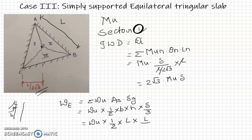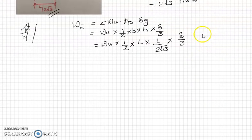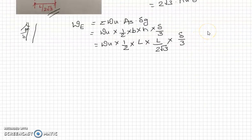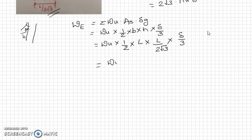So height will be L upon 2 root 3 into delta by 3. If we simplify this equation, we get this equal to wu L square delta upon 12 root 3.